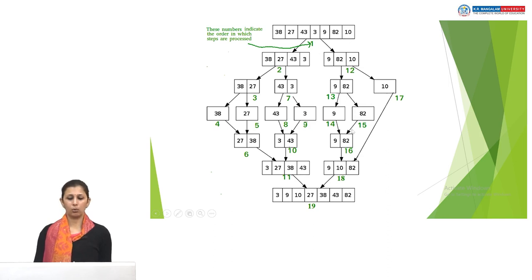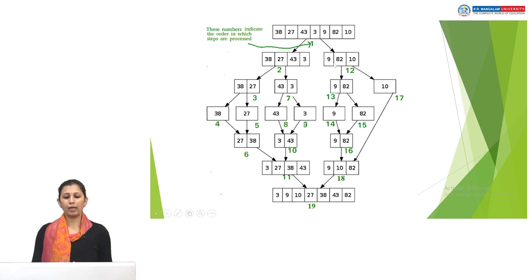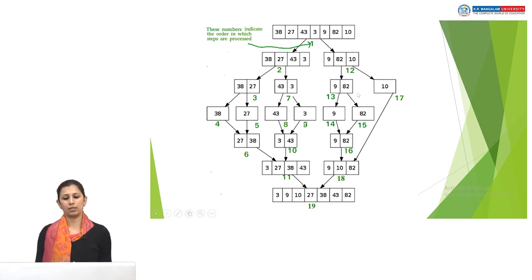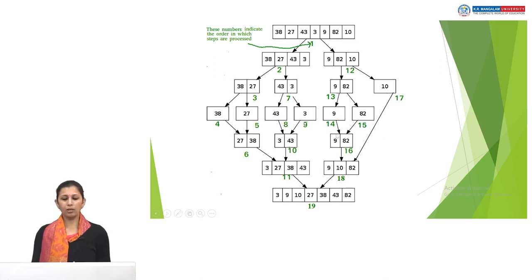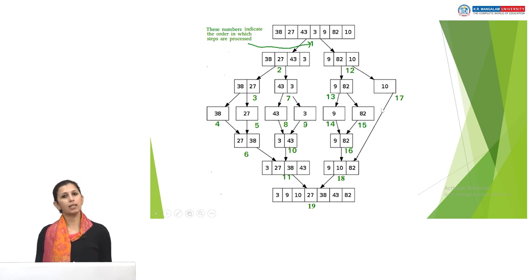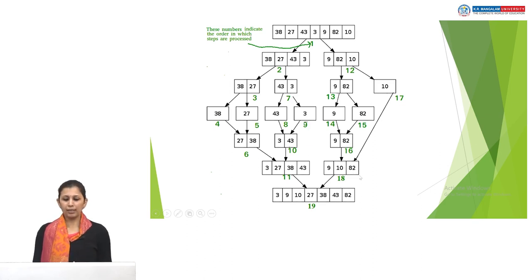Now we process the right side: 9, 82, and 10. We divide it — 9 and 82 on the left, 10 on the right. Breaking the left further: 9 and 82 become single elements. Comparing 9 and 82, since 9 is less, 9 stays left and 82 goes right. Then merging with 10: 9 is less than 10, so 9 is at index 0; 10 is at index 1; and 82 is at index 2. The right portion is sorted as: 9, 10, 82.